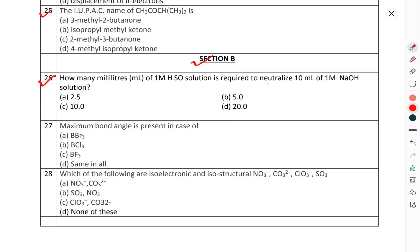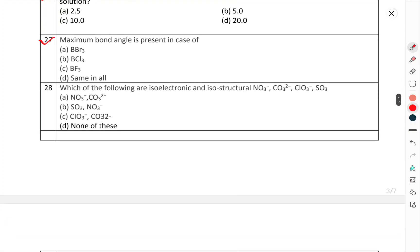Now we have to come to Section B. Question number 26: How many milliliters of 1M H2SO4 solution is required to neutralize 10 ml of 1M NaOH solution? Question number 27: Maximum bond angle is present in case of. Question number 28: Which of the following is isoelectronic and isostructural?